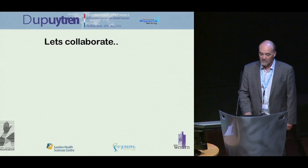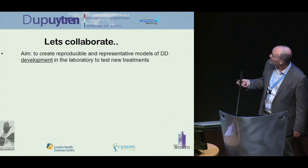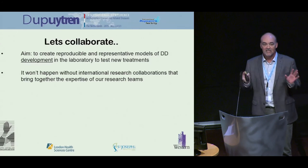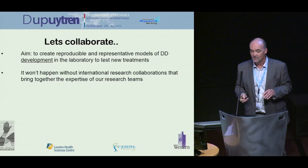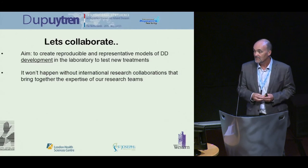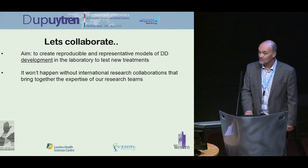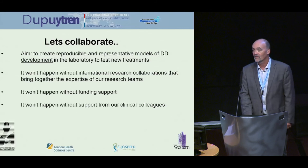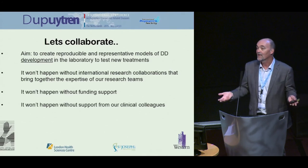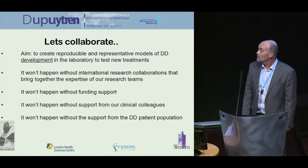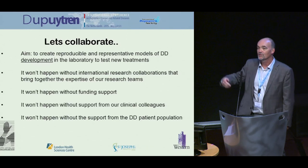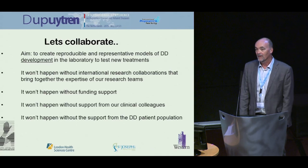These are the kinds of things that hold the future for where we need to go. To do this, we need to collaborate and create reproducible, representative models of Dupuytren's disease development to test new treatments. This won't happen without international research collaborations bringing together varied expertise. It won't happen without funding support, without support from our clinical colleagues — who supply the tissues that allow us to do these studies — and it won't happen without the Dupuytren's disease patient population getting behind us to raise money and awareness, so that we are leading the pack rather than following it.